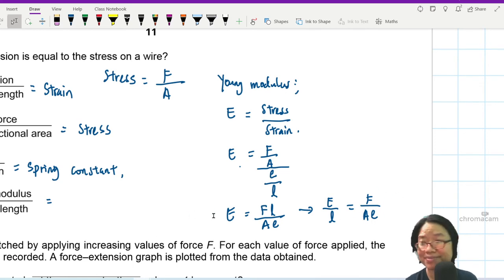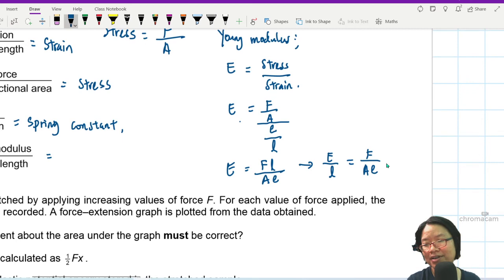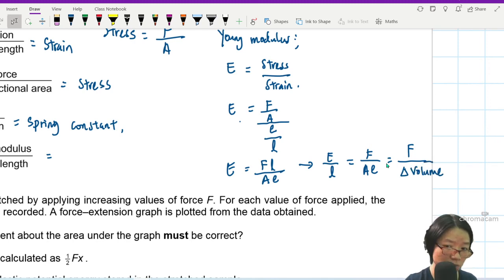Not that important - you can obviously do this derivation fairly quickly. So this is F over A times e, change in volume. We are assuming that the cross-sectional area change is negligible, but if you stretch anything, you know the thinner it gets.